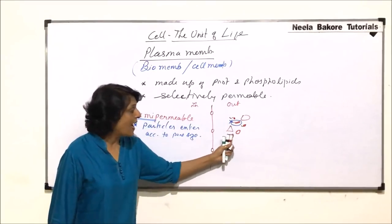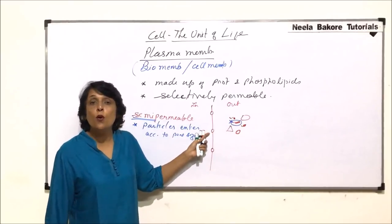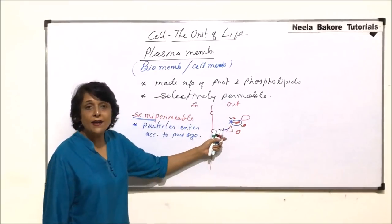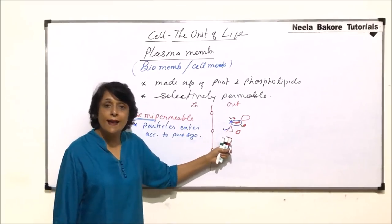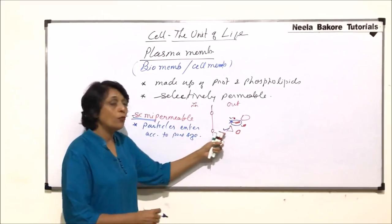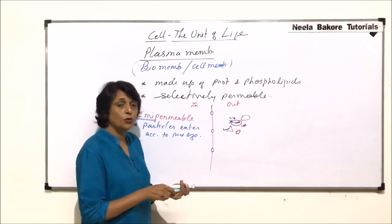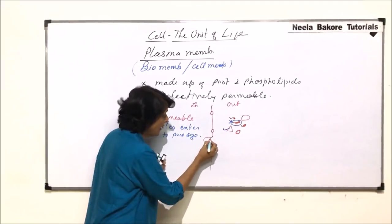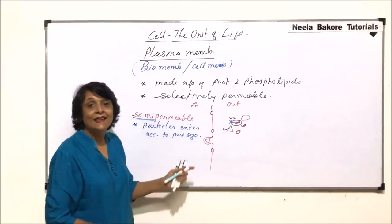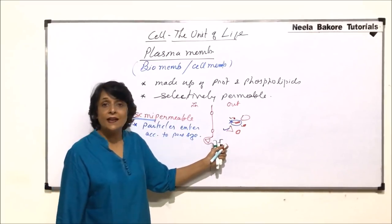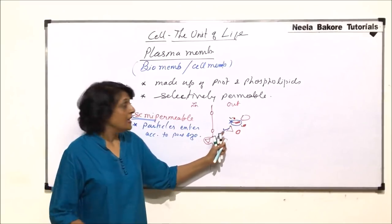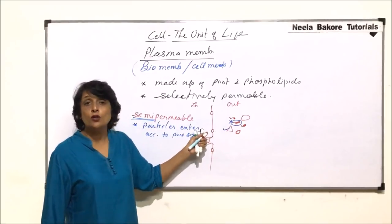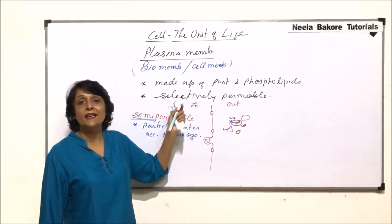Though a smaller particle can cross the pore, if it is not required it will not be allowed in. Larger particles which cannot cross the pore but are required by the cell — the cell is going to take it. Plasma membrane will help in taking this substance through endocytosis — there would be a folding or a cup-like structure formed and this larger particle would be taken in. That means the membrane selects which particle to be taken in, and then we call this membrane selectively permeable.